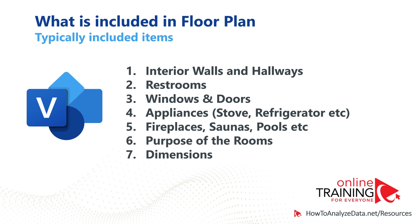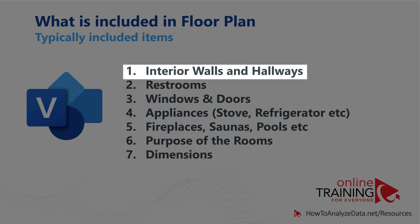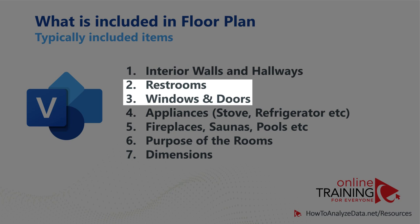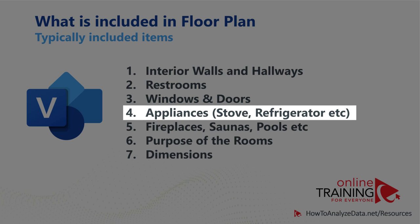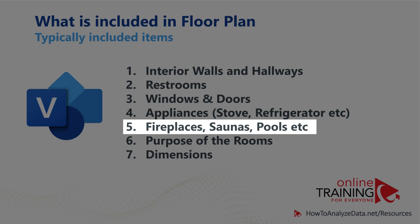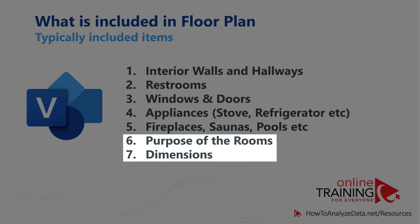There are certain items you might consider including in your floor plan diagram based on what you're trying to communicate. In addition to defining external dimensions, you might want to include internal walls and hallways, restrooms, windows and doors. You might also show appliances such as stove, refrigerator, fireplaces, saunas, pools, and other objects. What is also very useful is showing the purposes of the rooms as well as their dimensions.